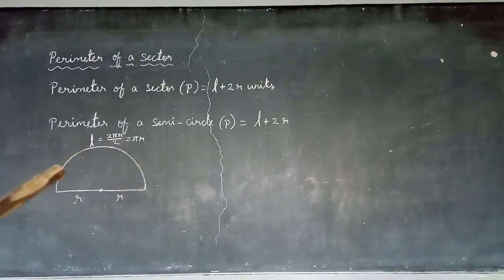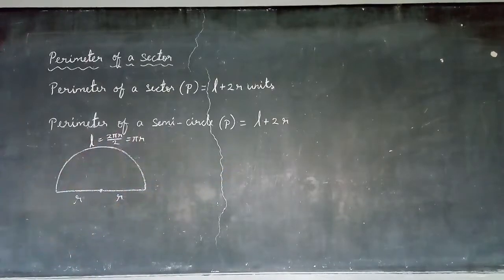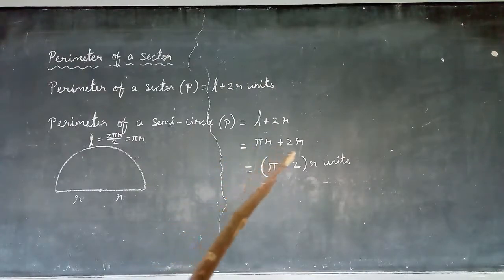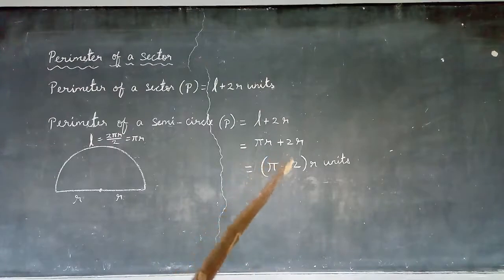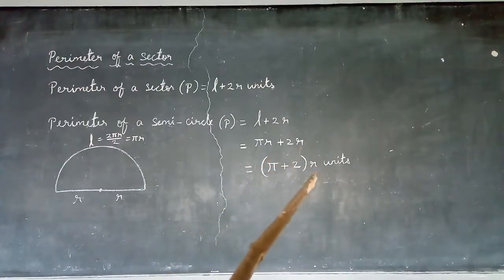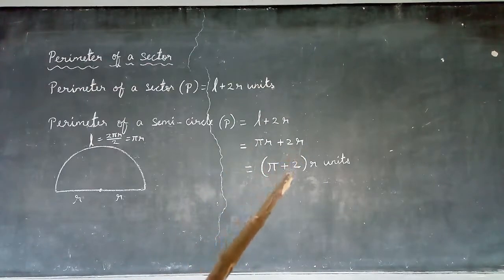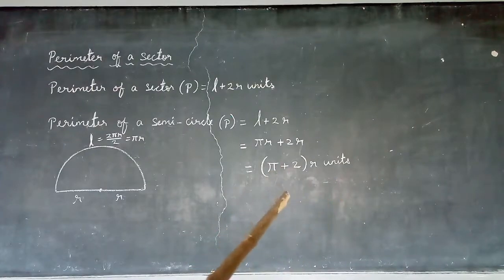The length of the semicircle arc is πR. So the perimeter of a semicircle equals πR plus 2R. Taking R as common, we get R(π + 2) units. This is the perimeter of a semicircle.